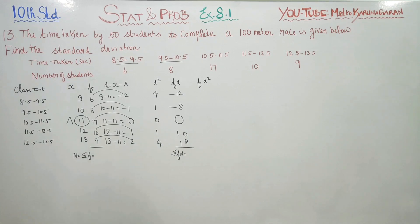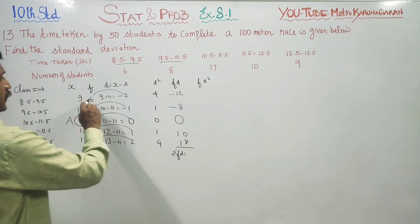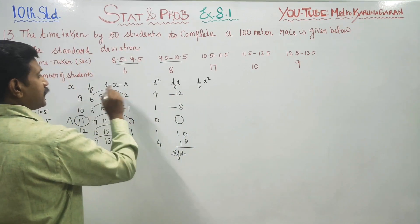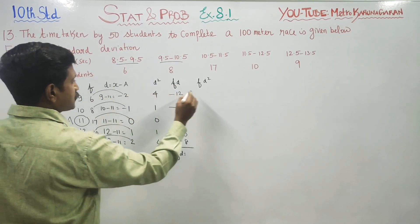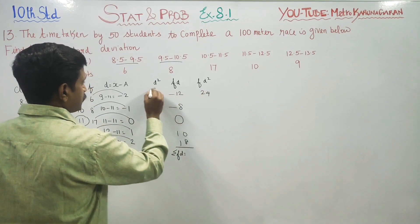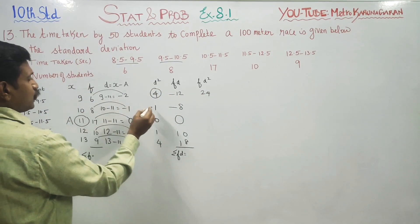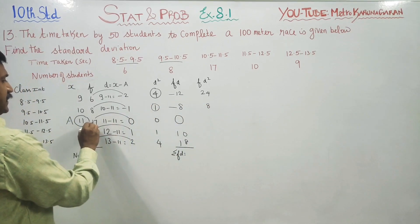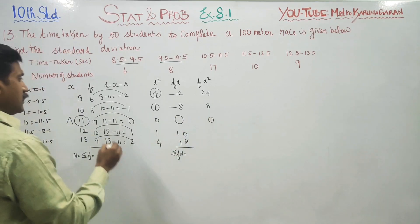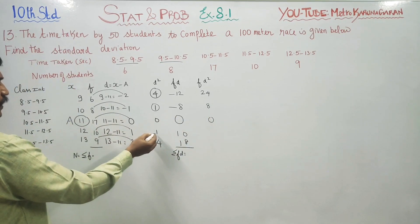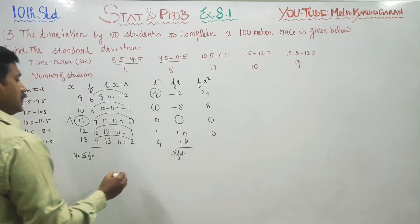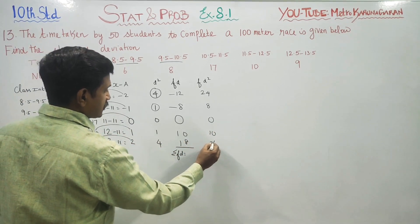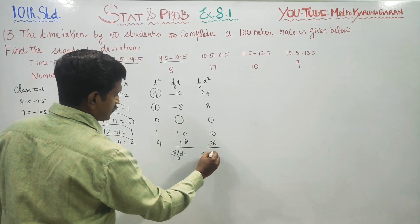Now sigma fd squared — that is f into d squared. 6 into 4 is 24. 8 into 1 is 8. 17 into 0 is 0. 10 into 1 is 10. 9 into 4 is 36. This is my sigma fd squared.